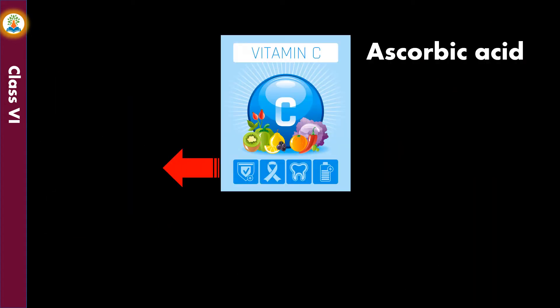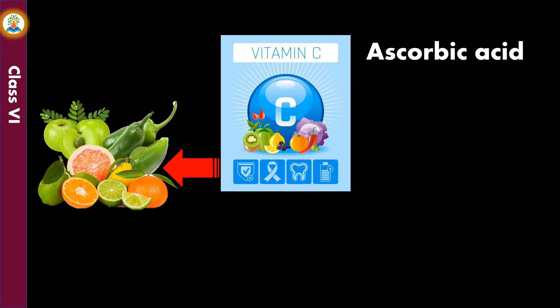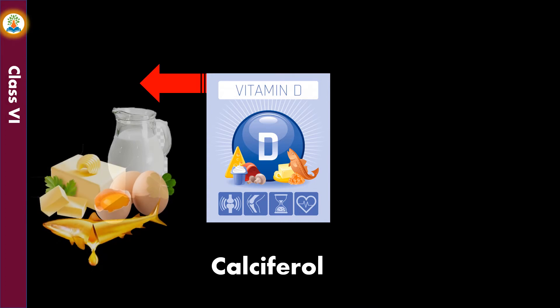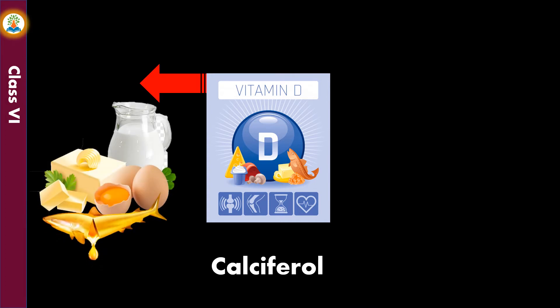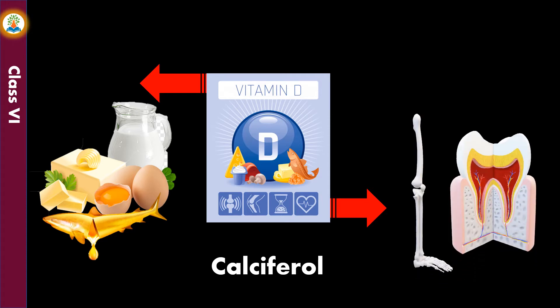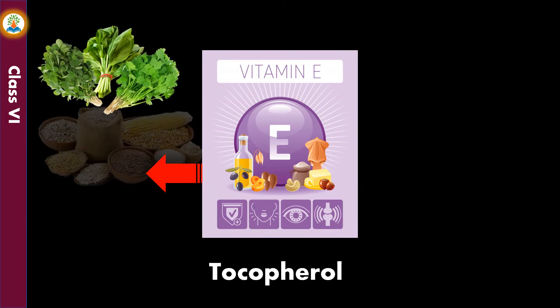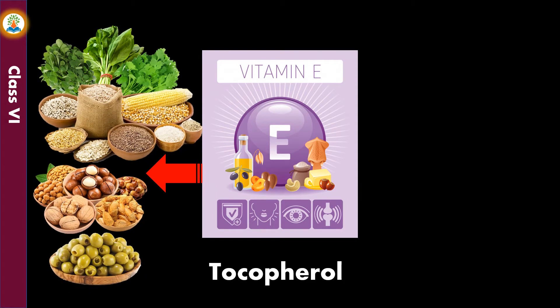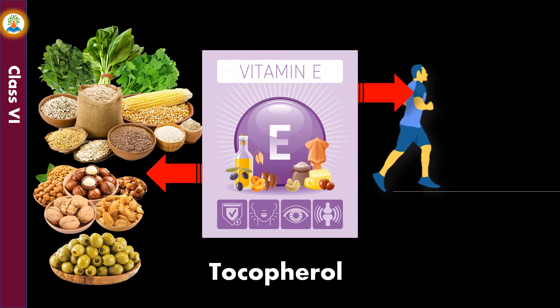Sources of vitamin C are green chili, citrus fruits such as oranges, lemons, and tomatoes; it helps our body fight diseases. Sources of vitamin D are milk, butter, cod liver oil, and eggs; it helps our body use calcium for strong bones and teeth. Sources of vitamin E are green leafy vegetables, whole grains, nuts, and olives; it is essential for general fitness and good skin.